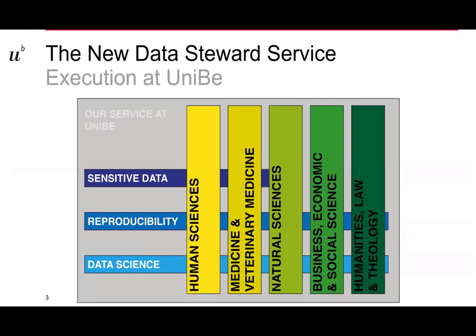The domains at the University of Bern for our service are structured in five pillars — those vertical pillars here. You have the human sciences, medicine and veterinary medicine, the natural sciences, business, economic and social sciences, and finally humanities, law, and theology. The idea is that every kind of research at the University of Bern is happening in one of those five pillars, and we're going to create a support structure that is mostly humans.